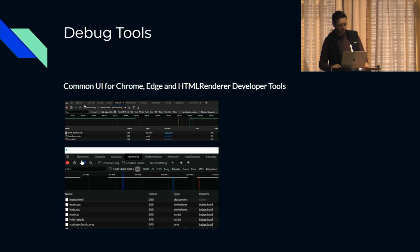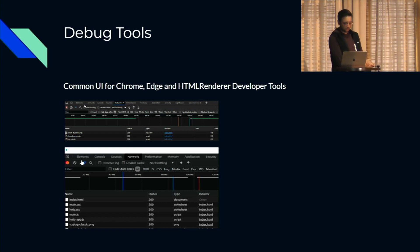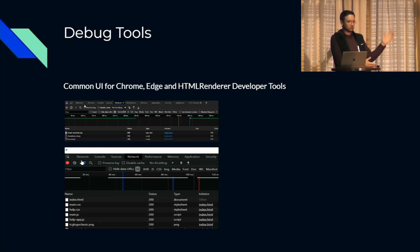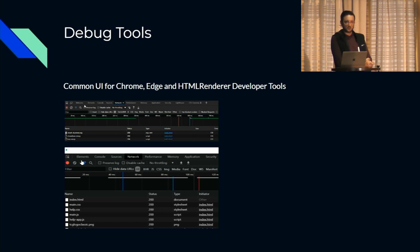Debug tools — common development tools. HTML render, Chrome, Edge all share the same tooling. So if you're developing in one, you know how to use the other. Visual Studio Code will host this too. Once you're familiar with them, it's easy to move around.